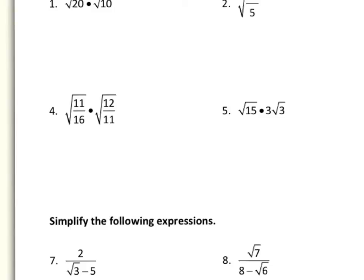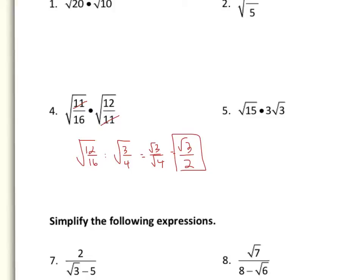For number four, just because there's a radical there shouldn't throw you off — these are just like multiplying fractions. Root twelve over root sixteen: you can take a four out of each. Four out of twelve is three, four out of sixteen is four, giving root three over root four. Root four is just two, so this breaks down to root three over two. Be confident with your rules; nothing too crazy on this page.